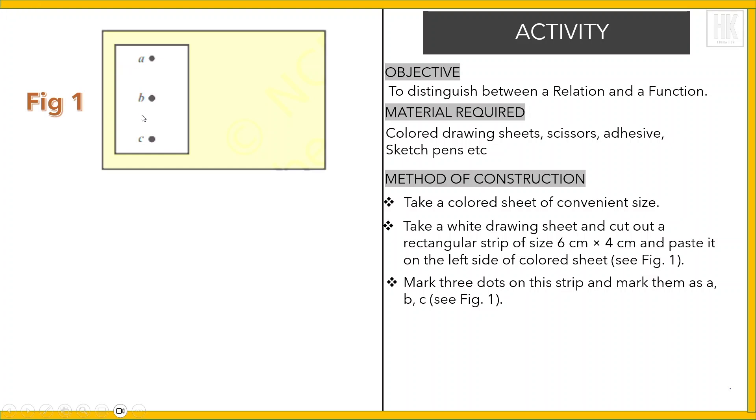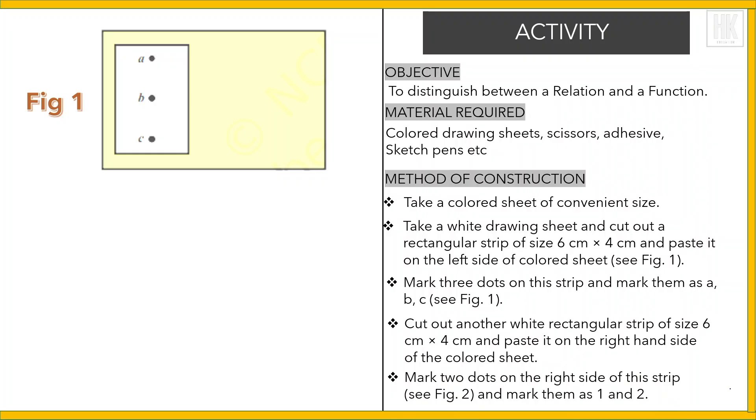These are the three dots a, b, and c pasted on the colored sheet. Now cut out another white rectangular strip of size 6 centimeter by 4 centimeter and paste on the right side of the color sheet. Mark two dots here, mark them as one and two.